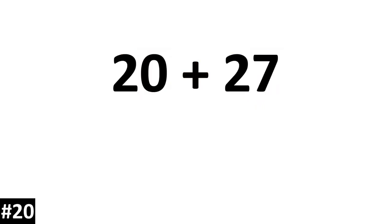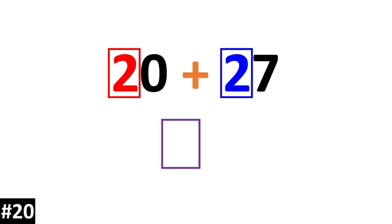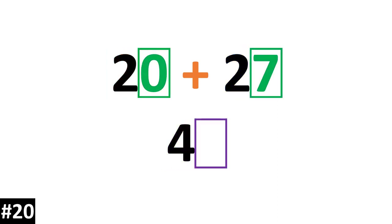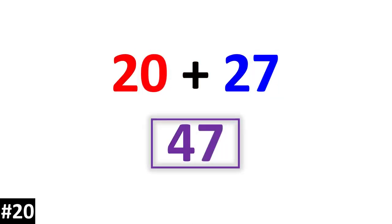20 plus 27. We have 2 tens plus 2 tens which gives us 4 tens. We add the ones: 7. The answer is 47.